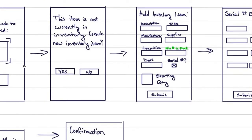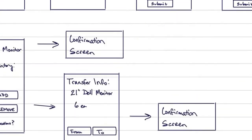Ultimately, we wanted to start with a barcode scanner to determine if an item is in inventory. If it's not, we'd present a screen to add it, making it easy to add serial numbers as applicable. We also wanted additional screens to allow adjustment of inventory amounts once an item is already in inventory.